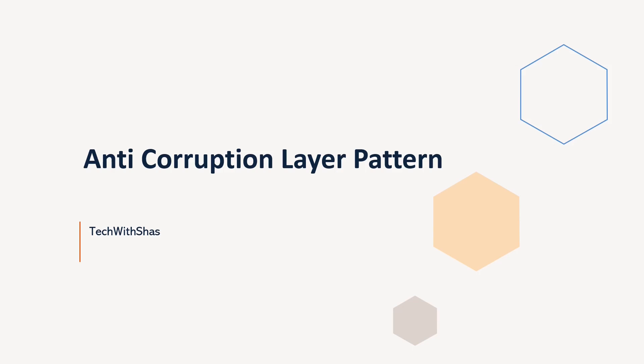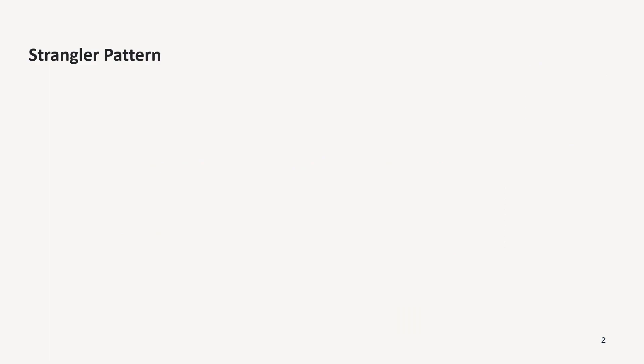Let us understand how this pattern can help us maintain the relationship between old and new systems. In our previous video, we talked about the strangler pattern, which is really helpful when we have a big monolithic application and we want to convert it to a microservices-based application gradually.